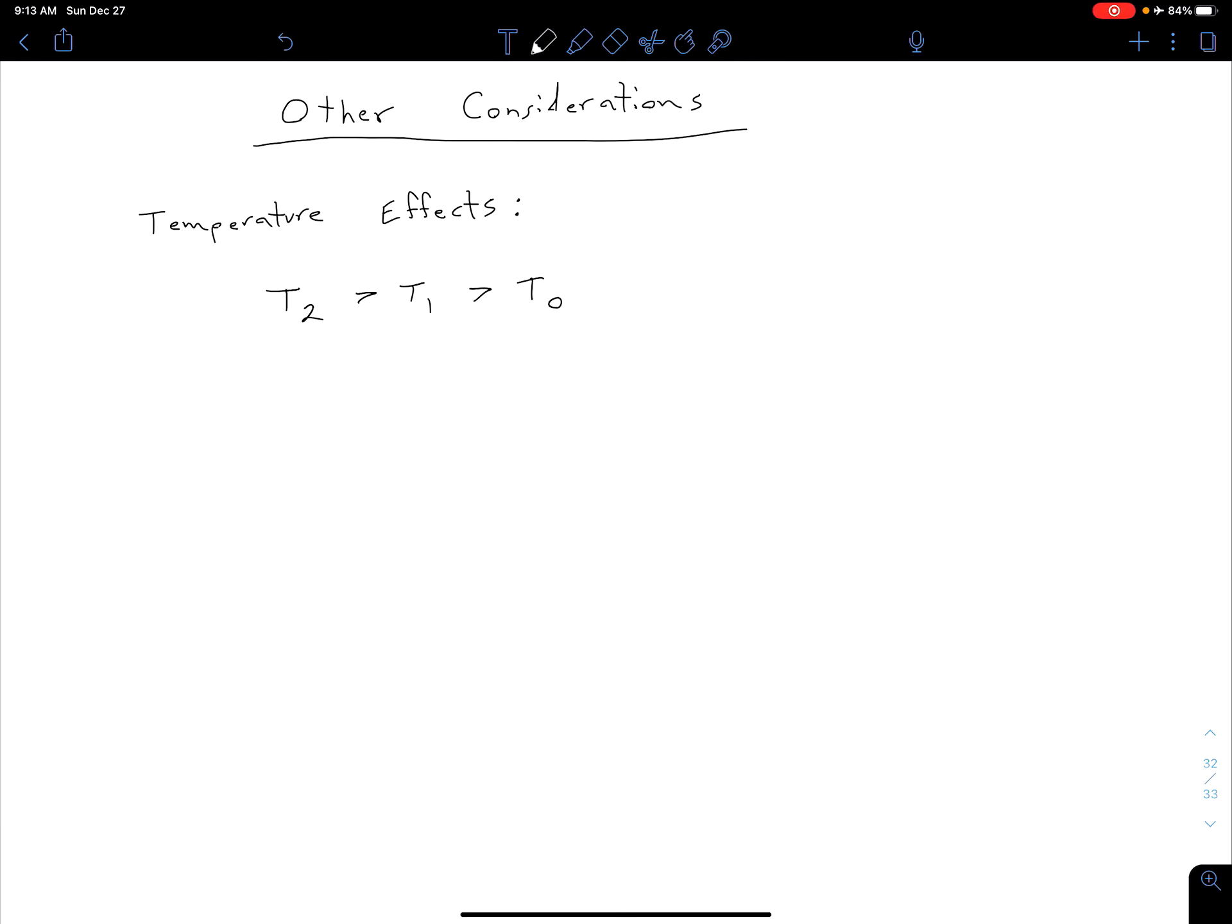Ultimately our temperature is going to affect two parameters in that ideal diode equation. It's going to affect our reverse saturation current via changes in our intrinsic carrier concentration. The other parameter that's going to be affected by temperature changes is of course our thermal voltage V sub T.